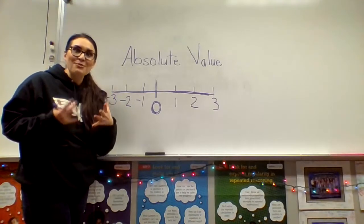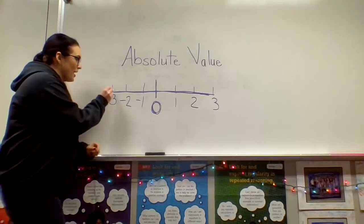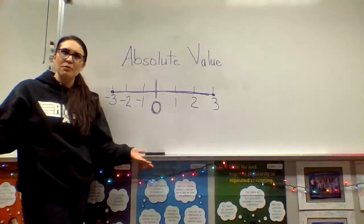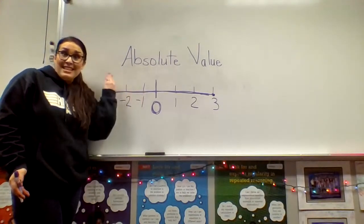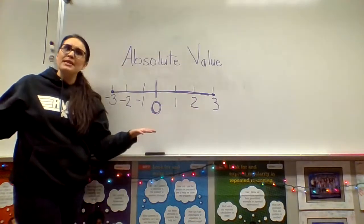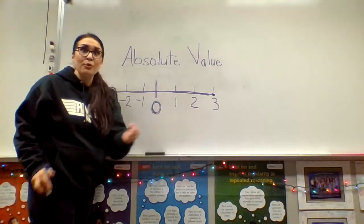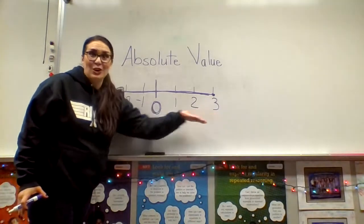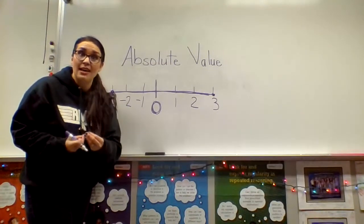Absolute value really gets at how far something is from zero. Even though we have negative three and positive three, aren't they both three spots away from zero? Yes — even though negative three is three spots toward the negative side, and positive three is three spots toward the positive side, they're still three spots away from zero. So we can say the absolute value of negative three or positive three is just three. Absolute value gives you that number without a sign — not negative, not positive. We're just talking about distance.